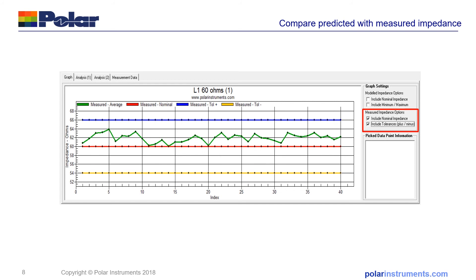In this example I've turned on the measured impedance options to include both nominal and the positive and negative tolerance. You can see here that the measured is all well within spec, but it's not really centred — everything is slightly on the high side. So if you wanted to adjust anything, you'd want to adjust so that you brought it back down towards centring around the nominal impedance.